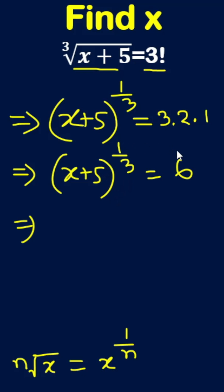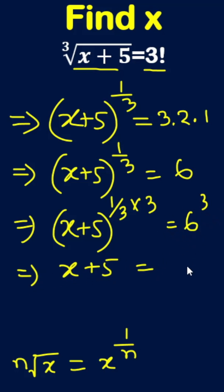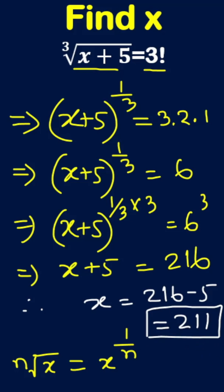To eliminate the 1 by 3 exponent, we cube both sides: x plus 5 to the power (1/3 times 3) equals 6 cubed. So x plus 5 equals 216. Therefore x equals 216 minus 5, which is 211. This is our answer.